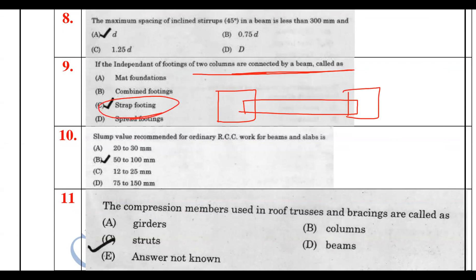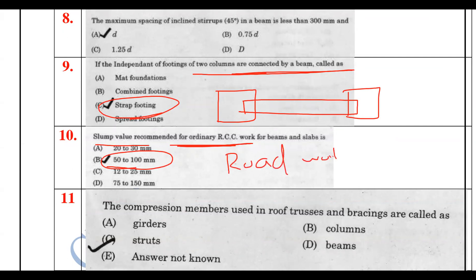The recommended slump value for RCC is 25 to 50 mm. For roads or pavements, the slump value is also in a specific range.